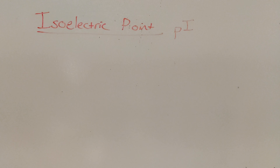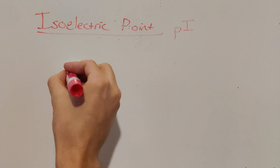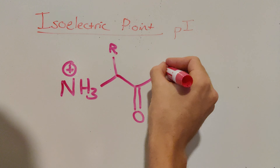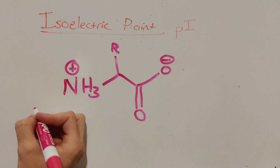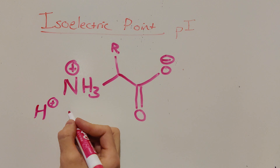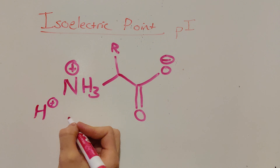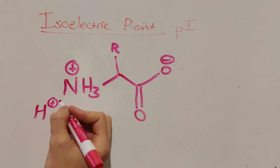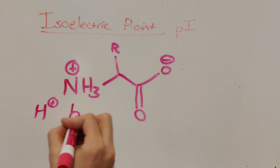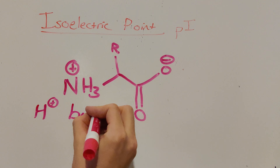I'm going to start by drawing a simple amino acid with no R group, just to visualize what it's going to look like, and then we'll get into a specific example with a real amino acid. As we take a look at our amino acid, we'll notice that the amine group is going to be a proton acceptor, because it's going to want to deprotonate things that have free hydrogens on them. This also means it would be considered very basic.